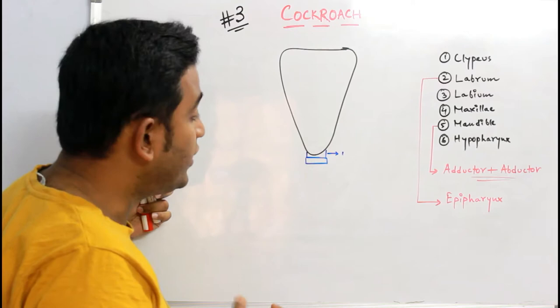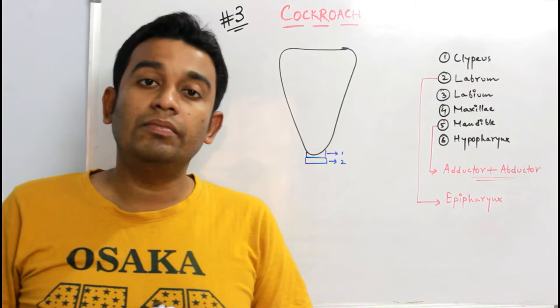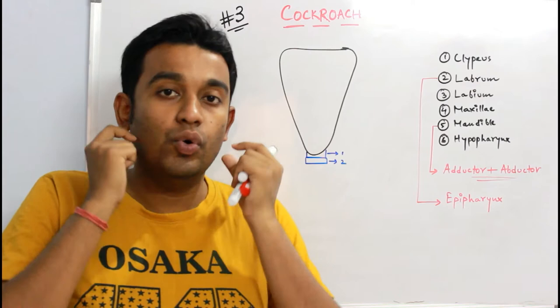So the first one is the clypeus, a clypeus plate-like structure which will allow the labrum to get attached with the head. As you know, labrum is upper lip, labium is lower lip, maxilla is upper jaw, mandible is lower jaw.